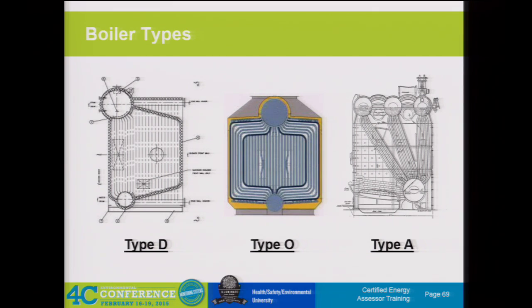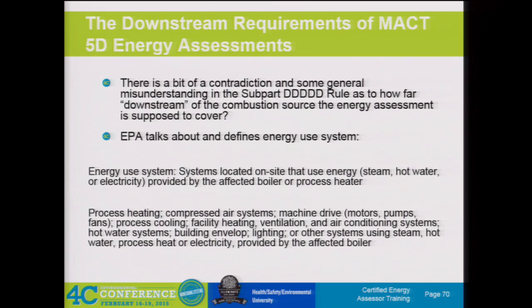The O-type boiler is very similar—it's just more of a symmetrical design around the firebox, with the tubes arranged on the outer sections, and the same kind of situation with the steam drum at the top and the mud drum at the bottom. The A-style boiler is a little different as far as the tubes and the firebox, and there are multiple steam drums in the header. For all these situations, these boilers are designed kind of how they are. Understanding a little bit of the operation is always helpful in assessing the efficiency of those units.